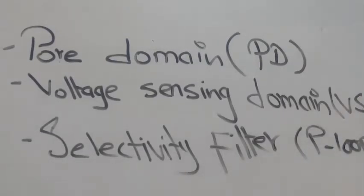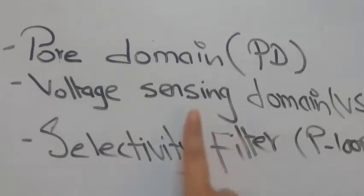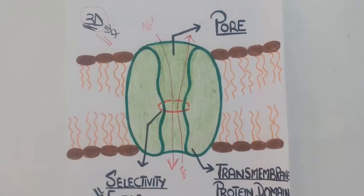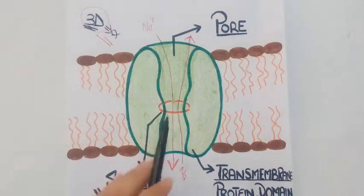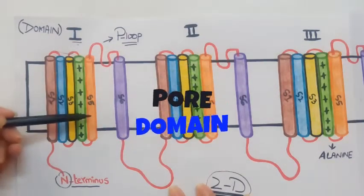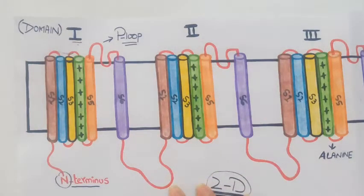There are three important parts of the voltage-gated sodium channel to discuss separately. First is the pore domain — we will see where it is located in this structure. Second is the voltage sensing domain, responsible for regulating channel function. Third is the selectivity filter. Recalling the diagram, the pore is the pathway through which sodium ions are transported, and the segments S5 and S6 along with the P-loop in each domain form that pore and selectivity filter.